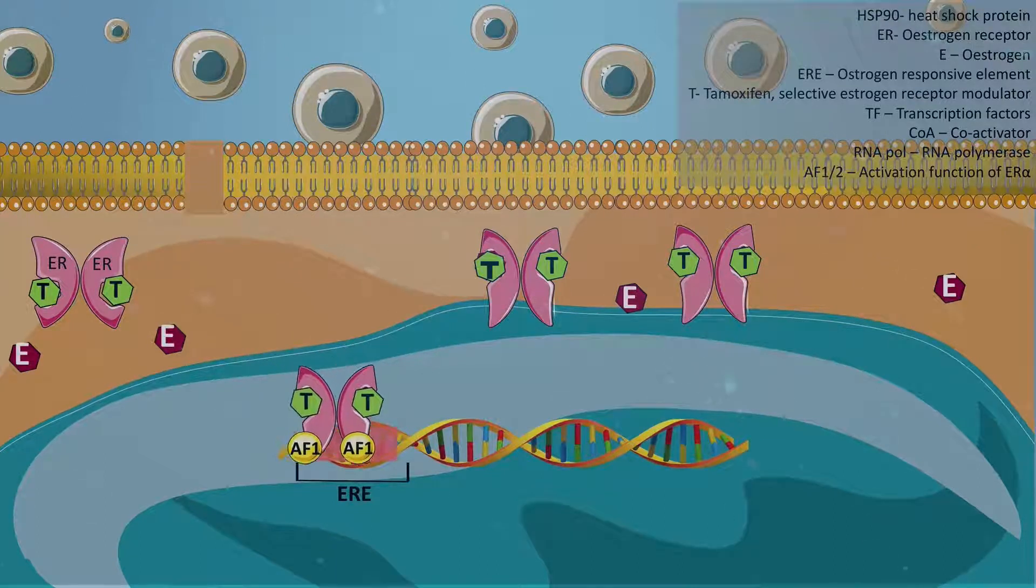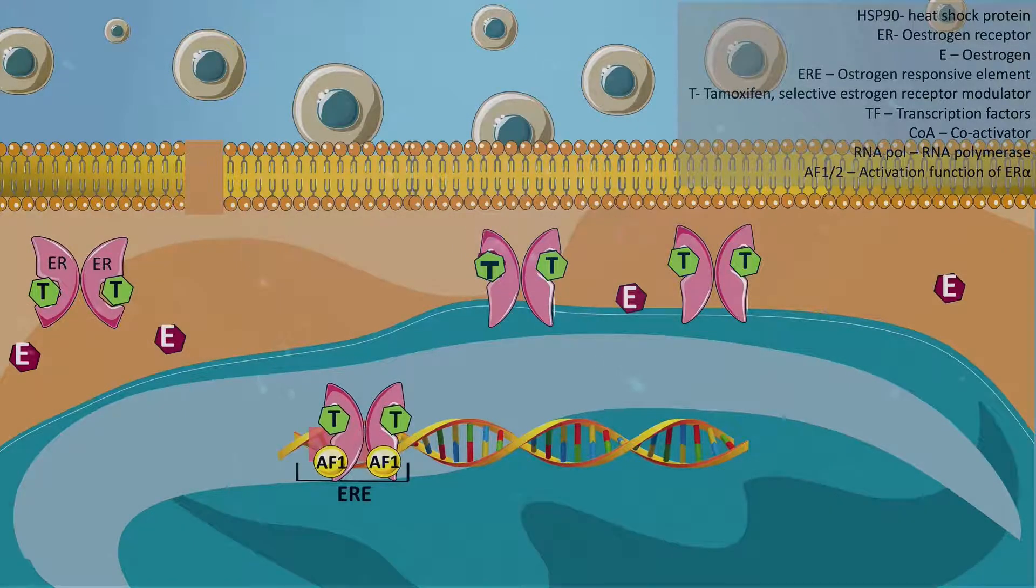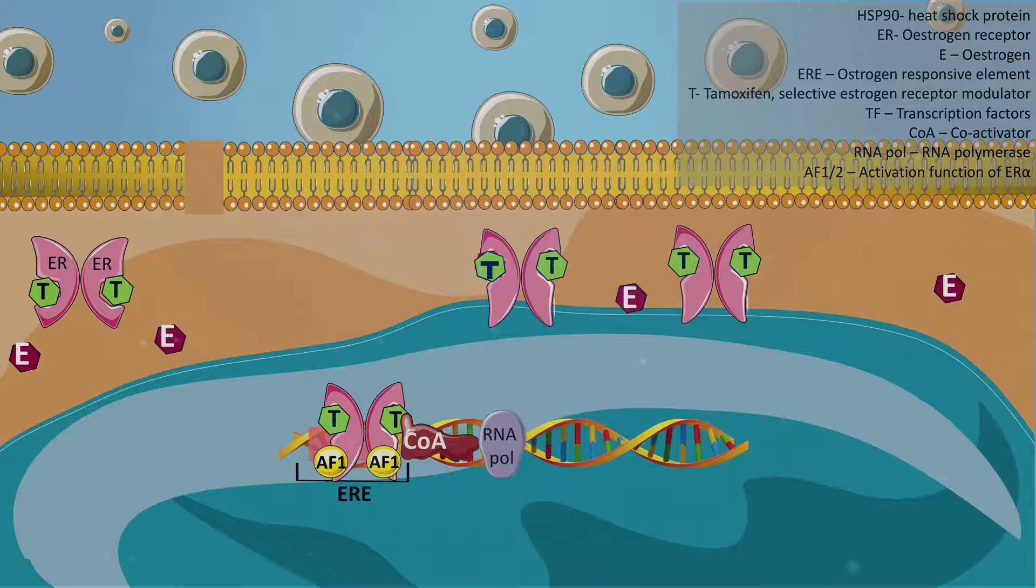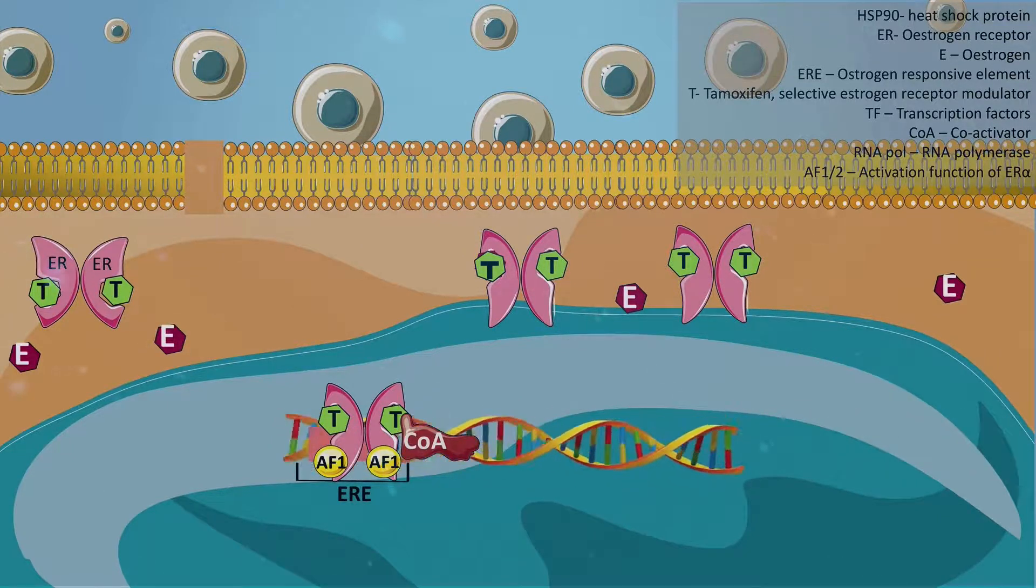The complex translocates into the nucleus and binds to the estrogen responsive element or the ERE. The activated AF1 site on the ER recruits co-activators to the ERE and promotes RNA polymerase mediated transcription.